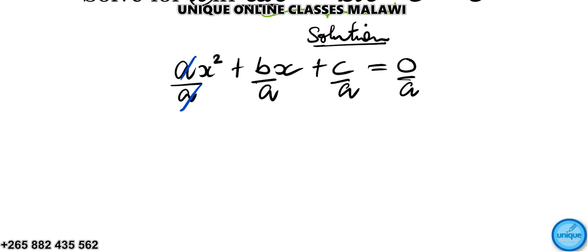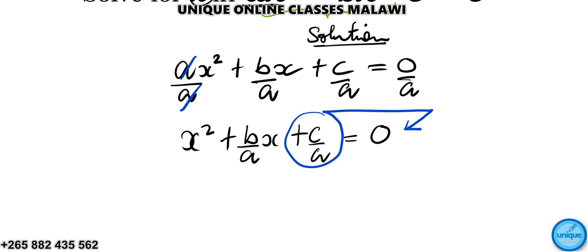We're going to take this term to the right hand side. So after taking that one, it will be x squared plus b over a x is equal to negative c over a.